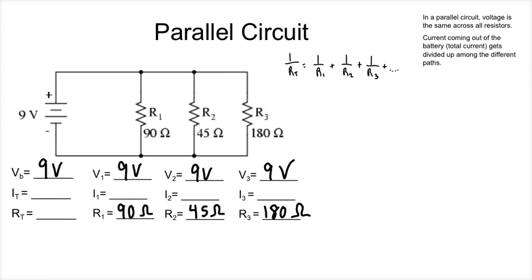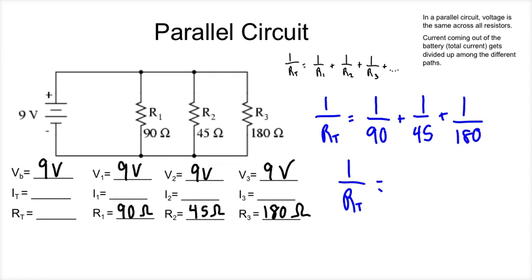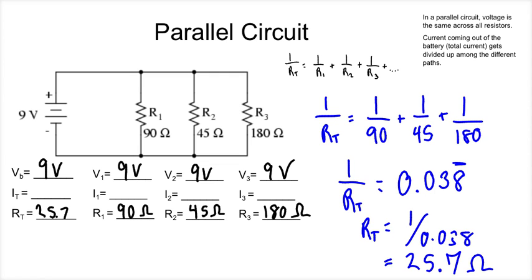Let's go ahead and solve for it using that equation. We have 1 over R total equals 1 over 90 plus 1 over 45 plus 1 over 180. So we plug it into our calculator. 1 over 90 plus 1 over 45 plus 1 over 180, and we get that 1 over R total equals 0.038 on and on and on. So when we do some algebra and rearrange it, we get R total equals 1 over 0.038. So when we do that, we get that R total is 25.7 ohms. And that makes sense. It should be less than the lowest resistor.